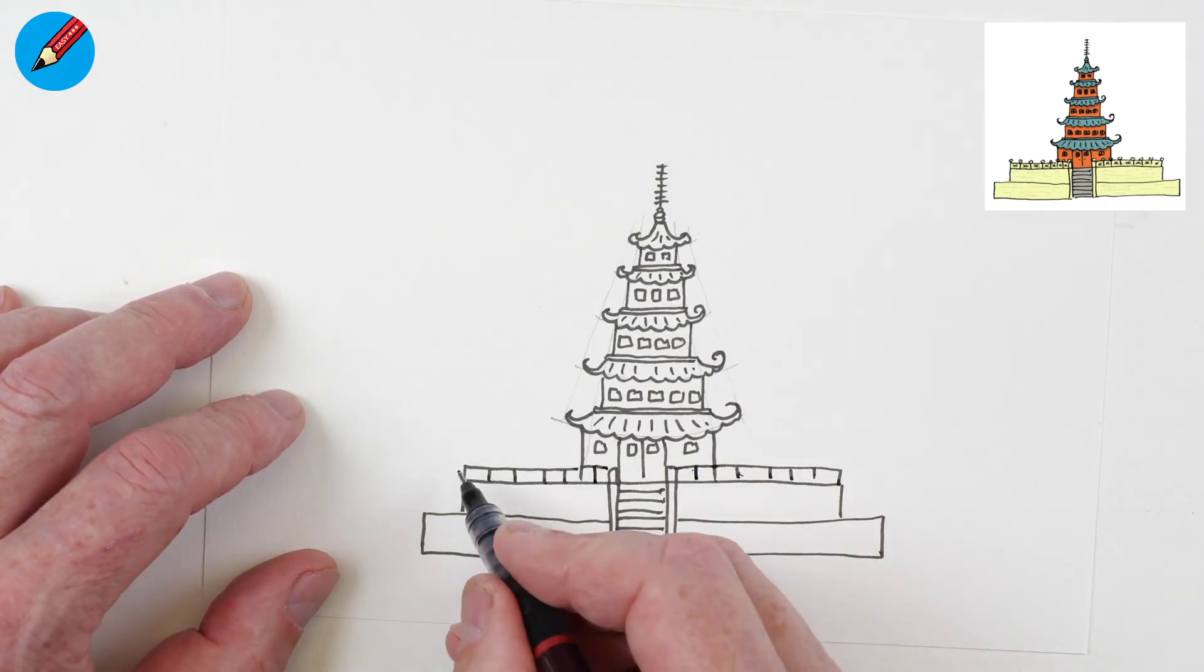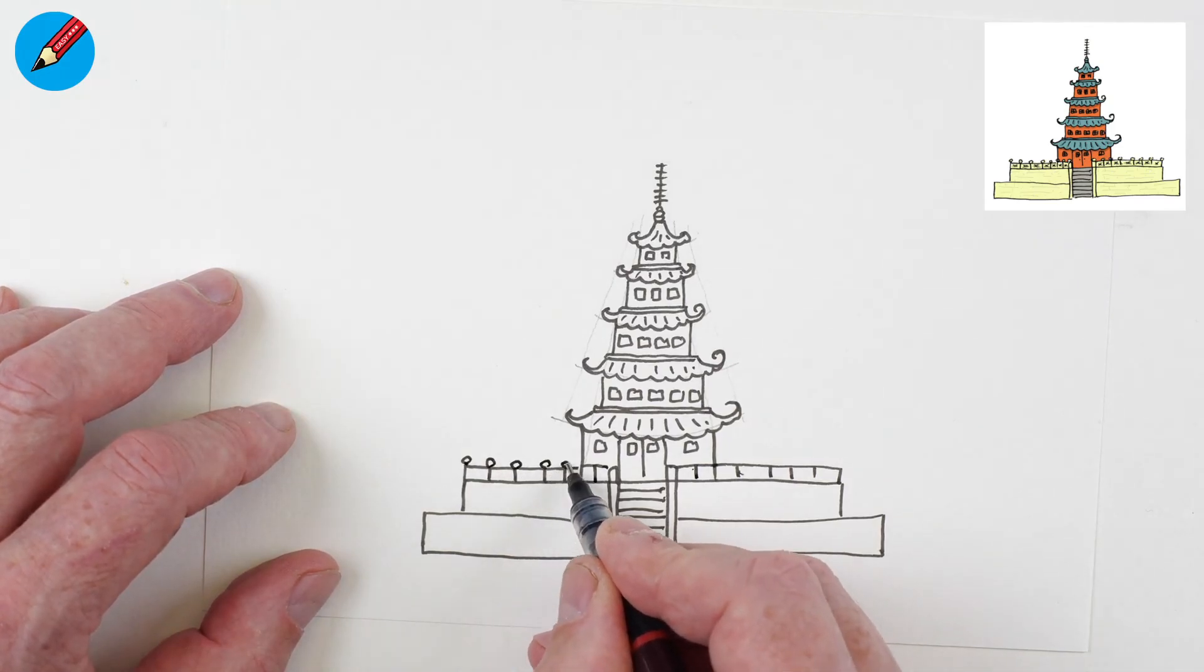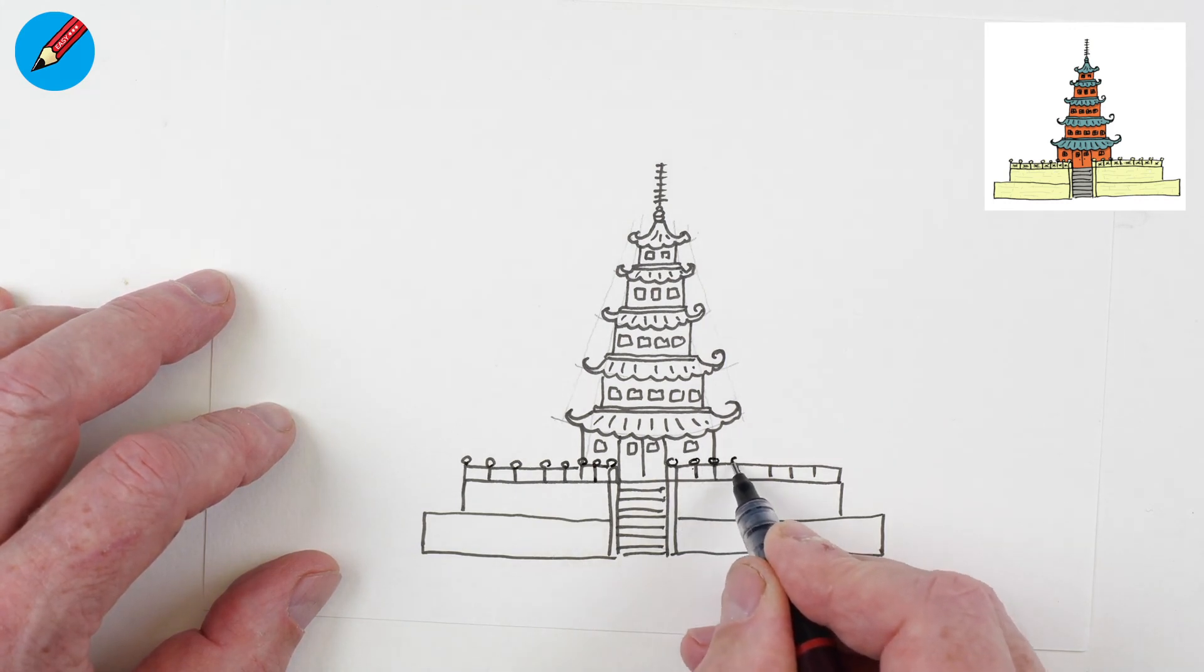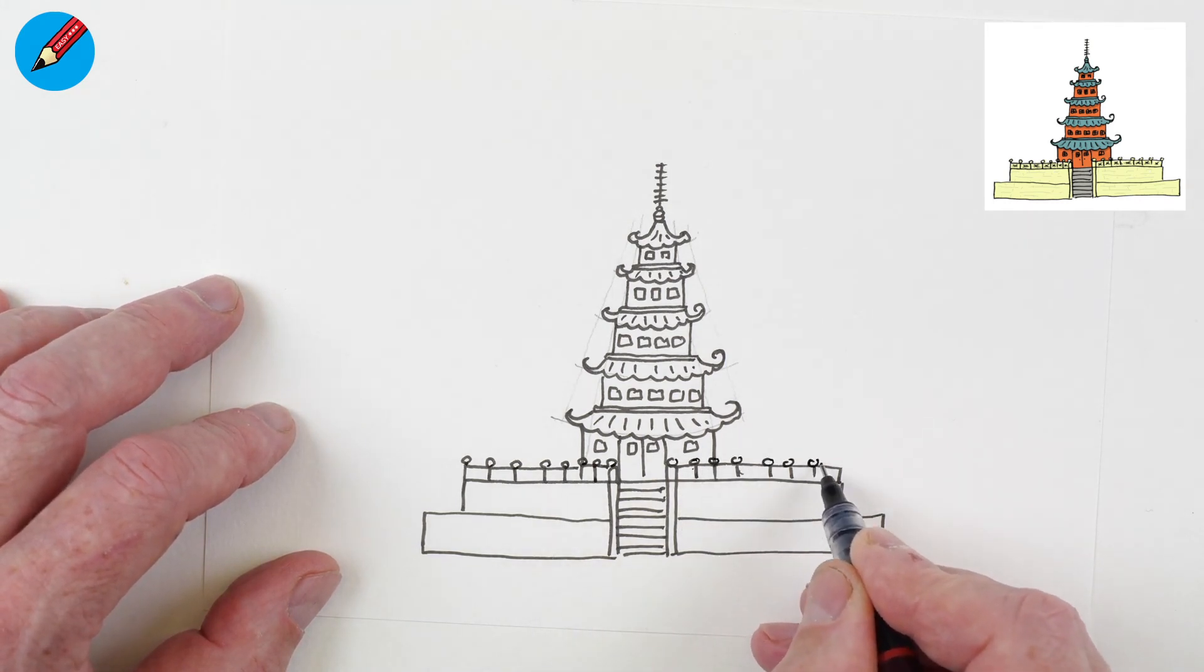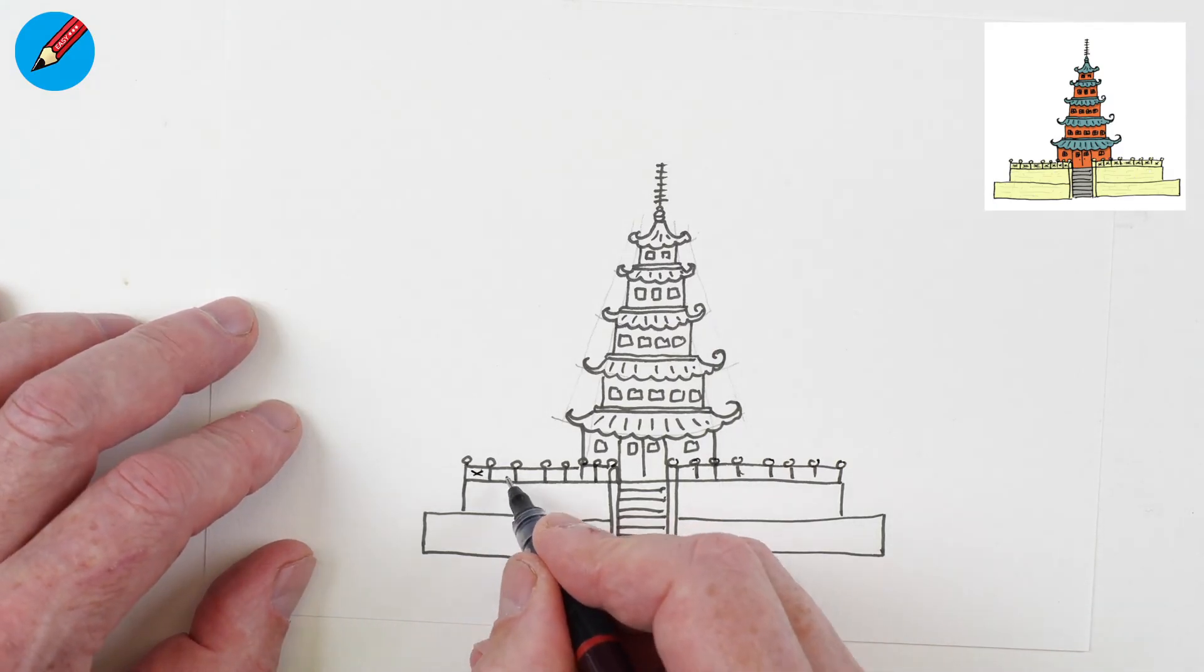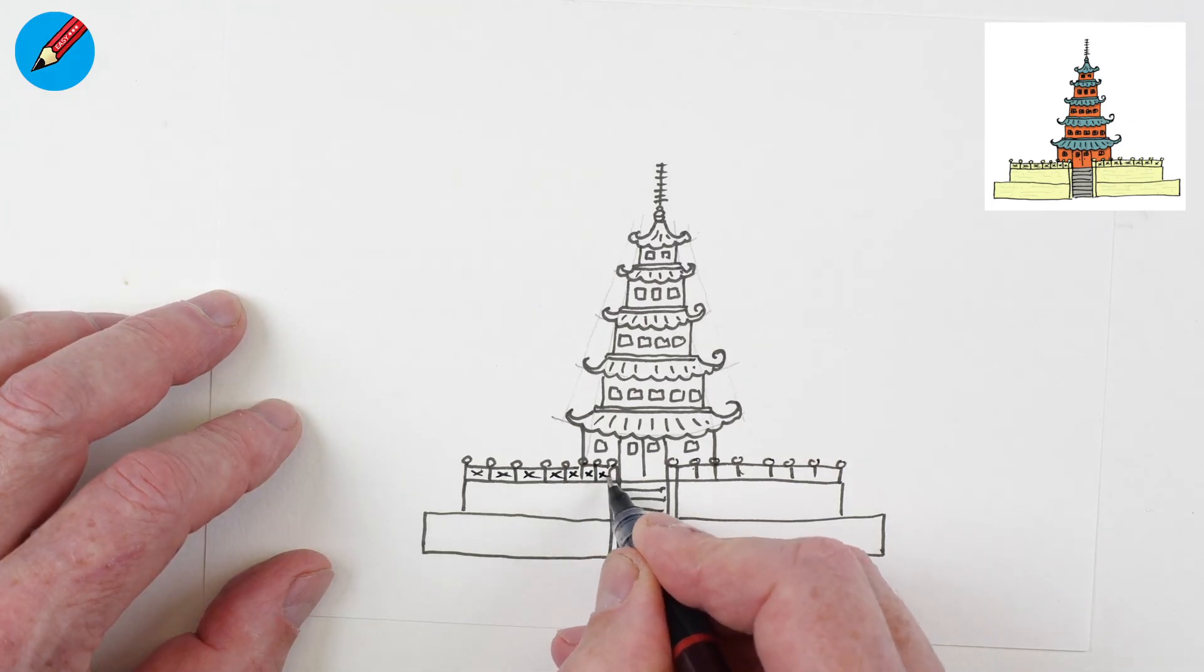And maybe put those in there. Let's put little pom-poms on the tops of these balustrade bits like that, just makes it look a bit more interesting. And let's do something like little crosses inside there, which makes it a bit more interesting too.